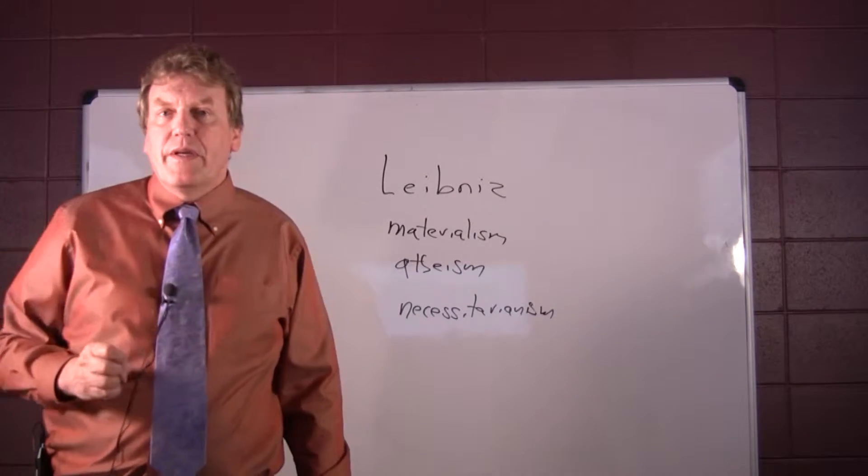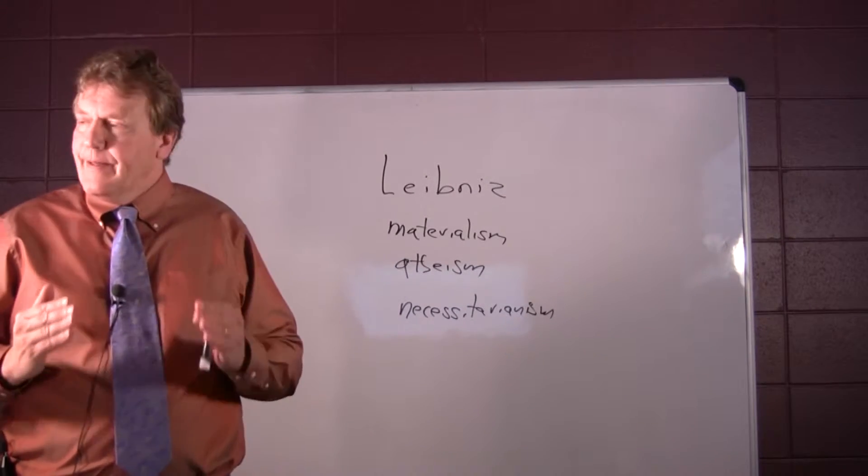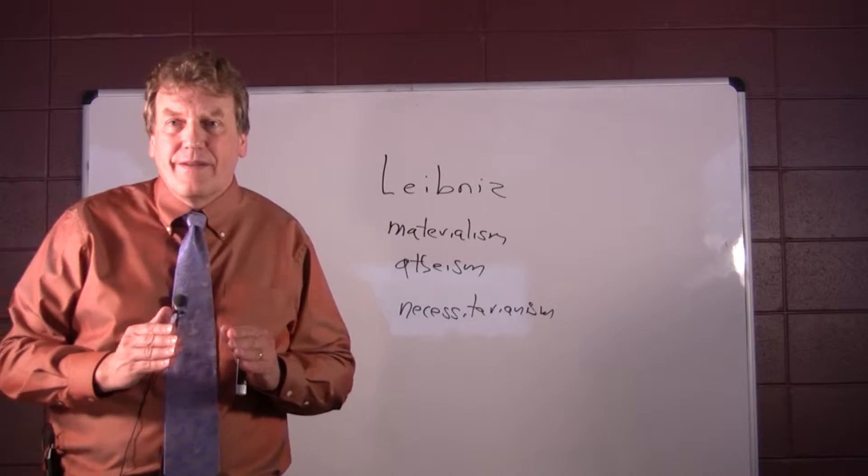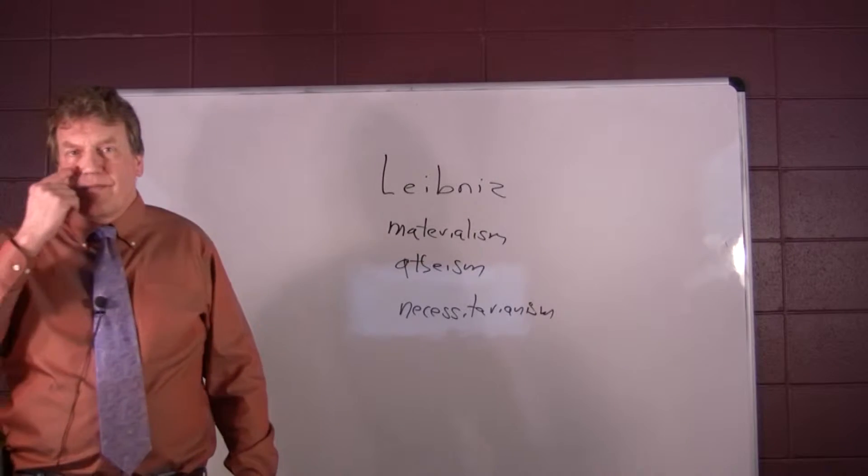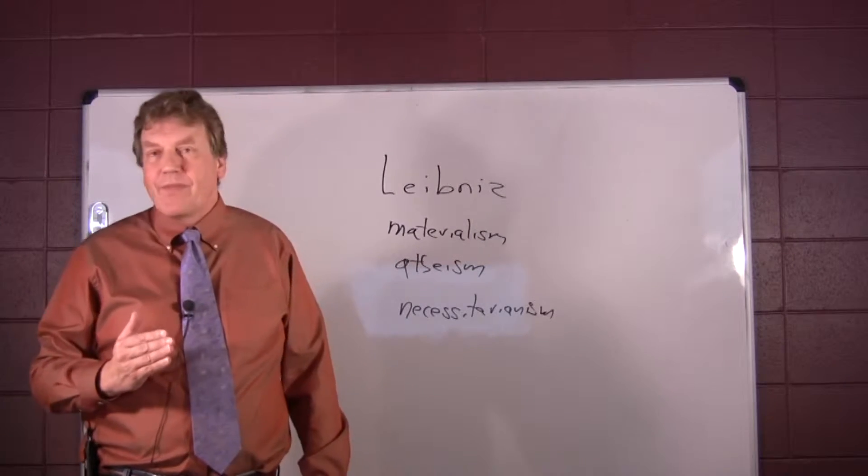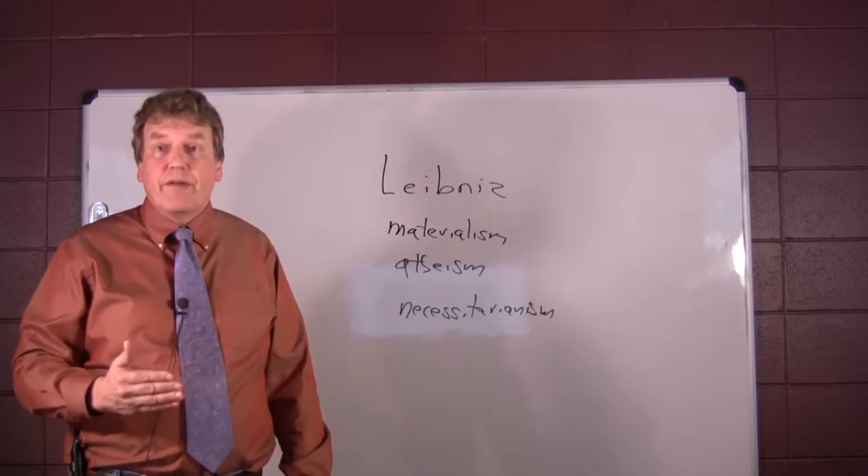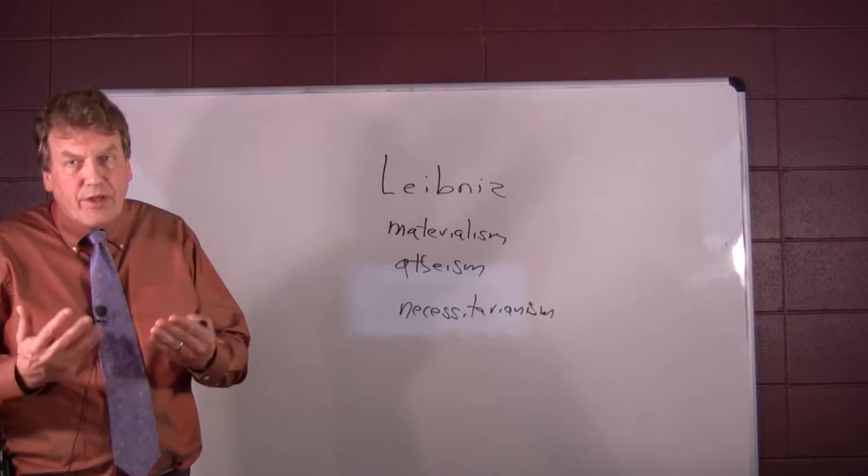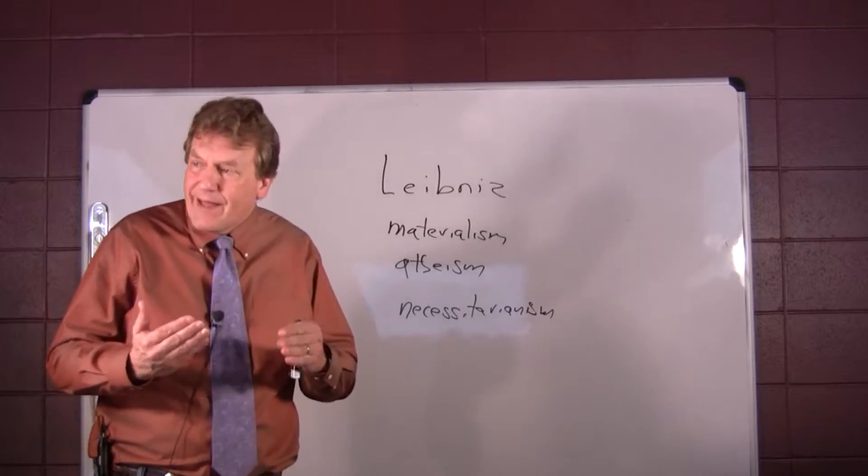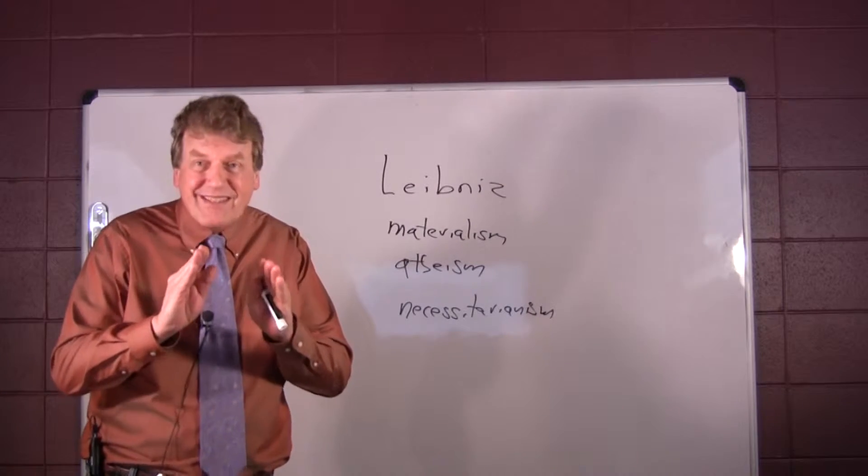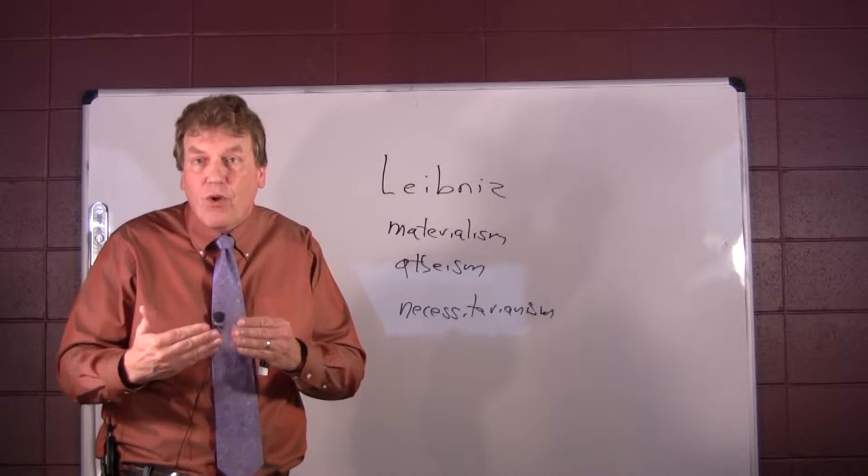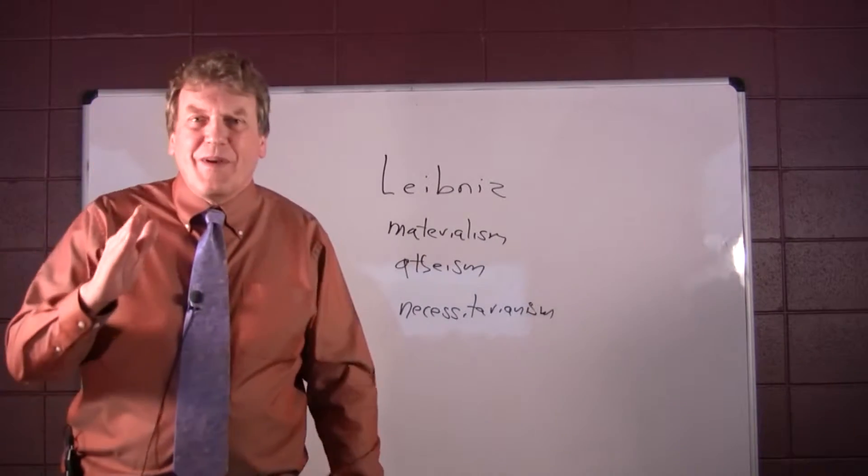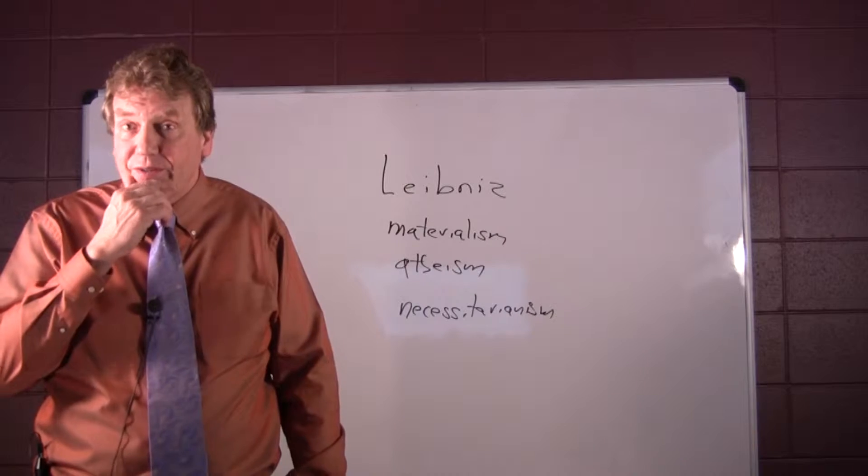Materialism. Leibniz is going to deny that the essence of body is extension. Because if it were to be so, it makes body infinitely divisible, and thus there would be no simple unities that he believes must exist at the ontological ground floor. So we're going to see how this works, but he's going to deny materialism.